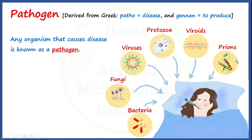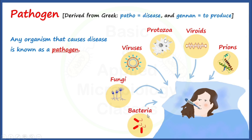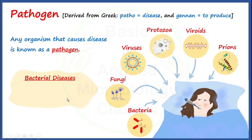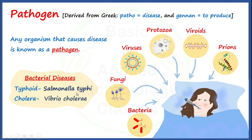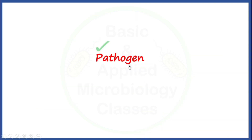Let's have a look at examples of bacterial pathogens. Salmonella typhi is a bacterial pathogen responsible for causing typhoid disease. And Vibrio cholerae is a well-known bacterial pathogen known to cause cholera.